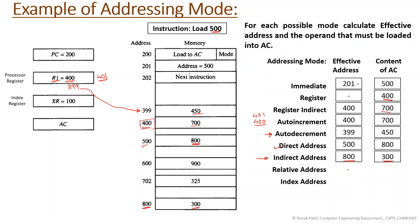In relative address mode, the address field is added to the program counter. The instruction is two bytes, so after fetching it the program counter becomes 202. Adding 202 plus the address field 500 gives 702 as the effective address. The content at address 702 is 325, so 325 is loaded into the accumulator.